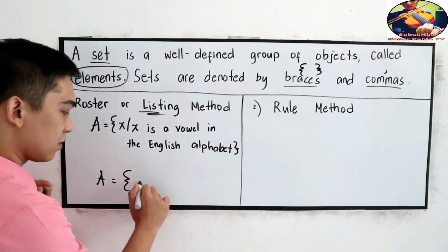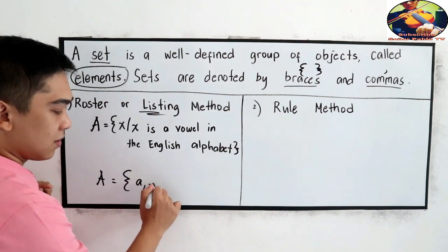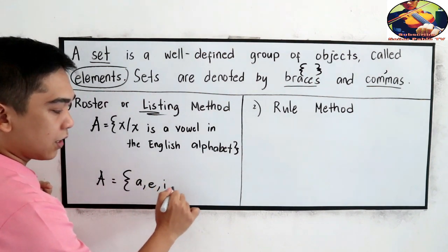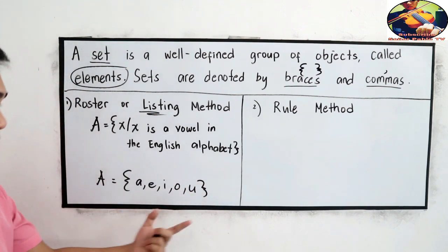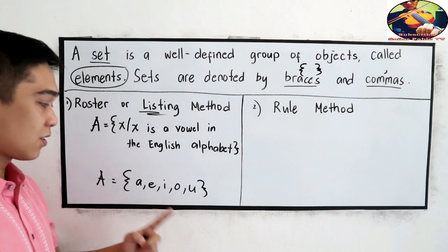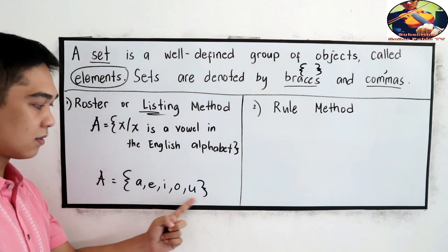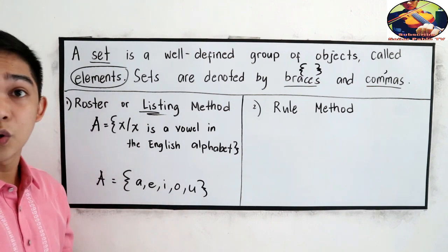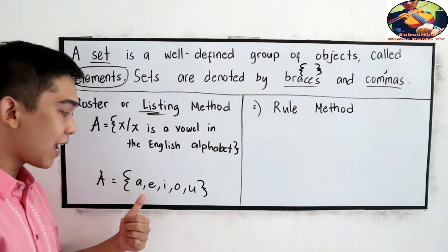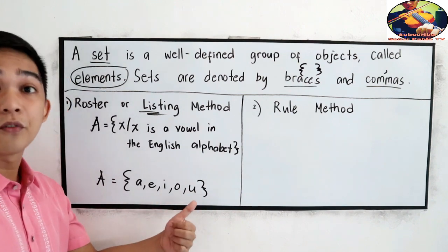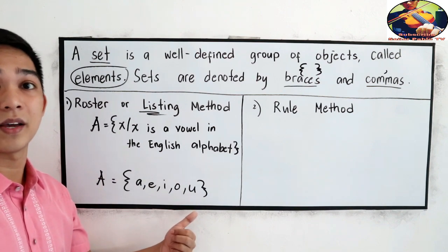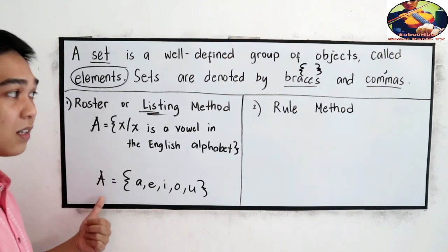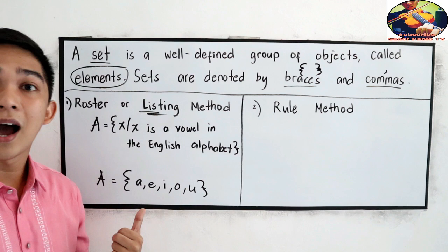So, we have the A E I O U. Then, close braces. Separated by comma. And of course, we use the small letter A E I O U for our elements to indicate our elements. And the capital letter to indicate our set.